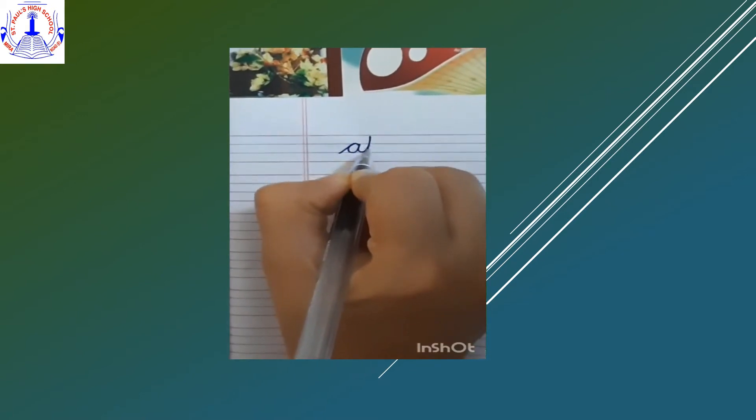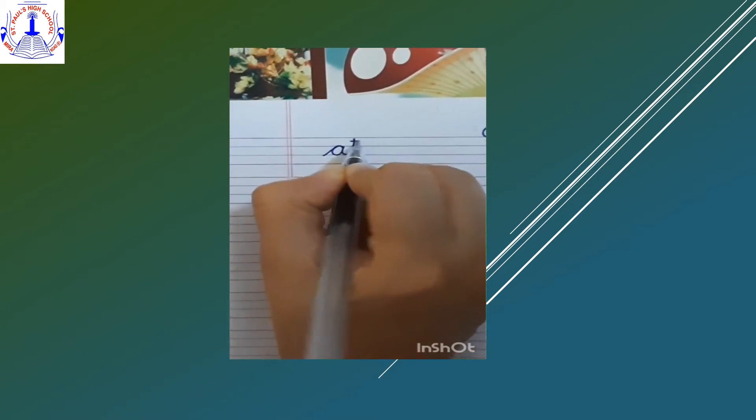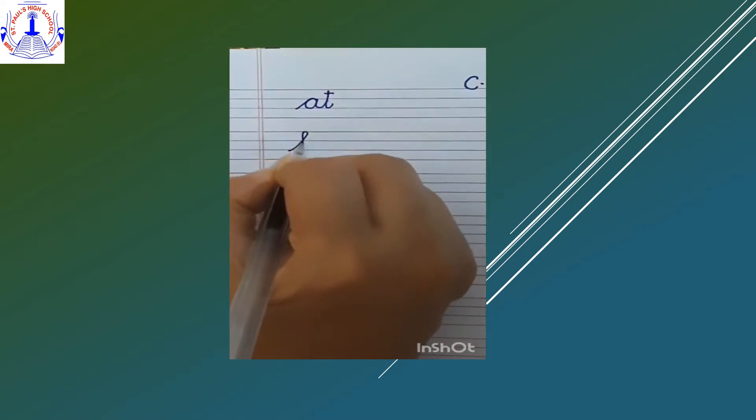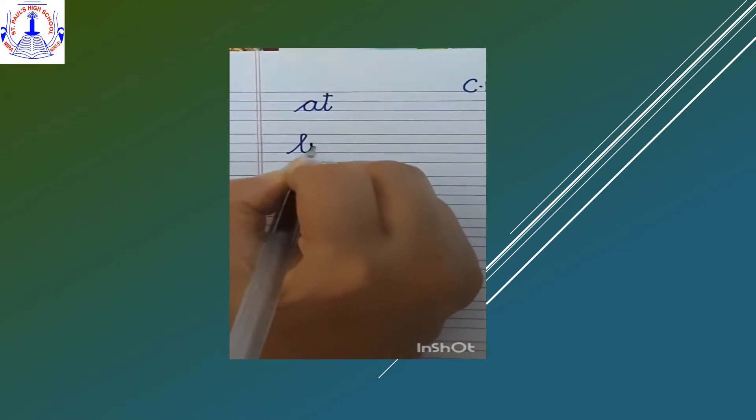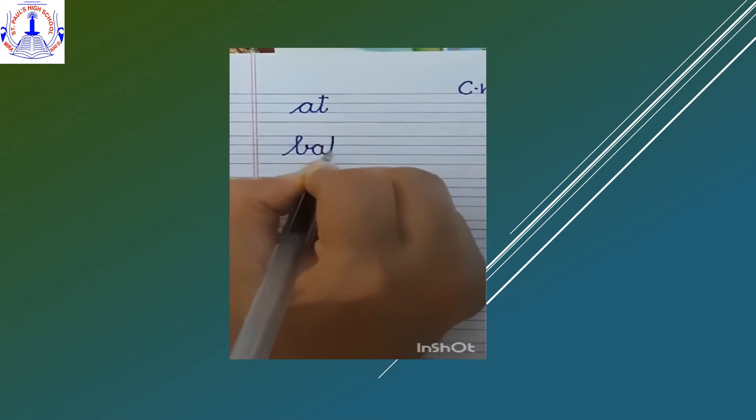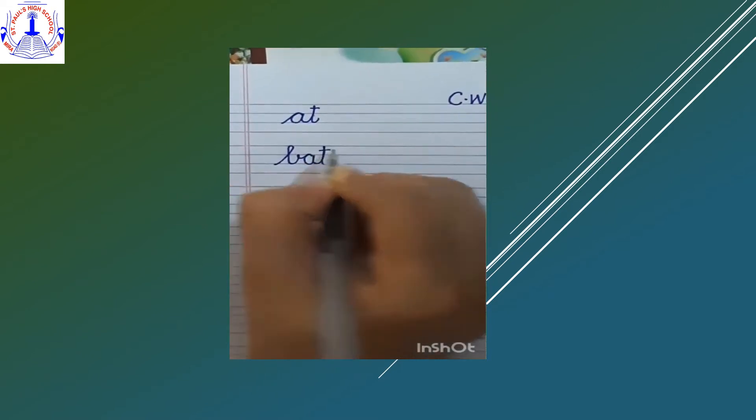So first write small cursive A joining with T. AT, AT. First word is small cursive B joining with A joining with T. B-A-T, bat.